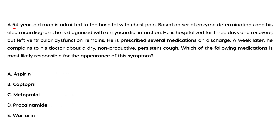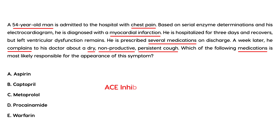A 54-year-old man is admitted to the hospital with chest pain. Based on serial enzyme determinations and EKG, he is diagnosed with a myocardial infarction. He is hospitalized for three days and recovers, but left ventricular dysfunction remains. He is prescribed several medications on discharge. A week later, he complains of a dry, nonproductive, persistent cough. Among the listed medications, the one that is an ACE inhibitor — the one ending in 'pril,' specifically Captopril — is the most likely cause of his cough.